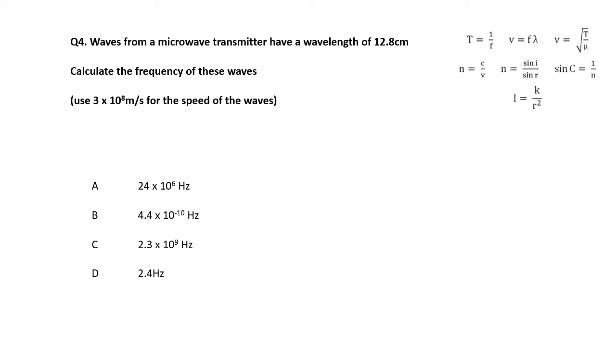Waves from a microwave transmitter have a wavelength of 12.8 centimeters. Calculate the frequency. We know the speed of these waves because they're electromagnetic. So we're going to use the wave equation. V equals F lambda. We want the frequency. So F equals V over lambda. Which is 3 times 10 to the 8 divided by 0.128, because it has to be in meters. You can't leave it in centimeters. And if you work that out, you should get that one there, 2.3 times 10 to the 9 hertz.